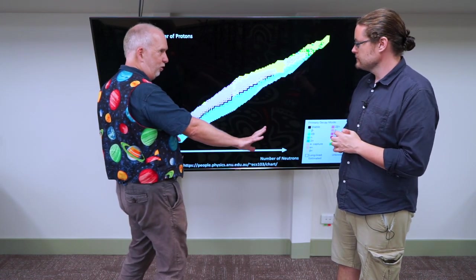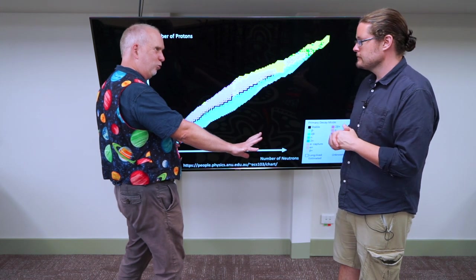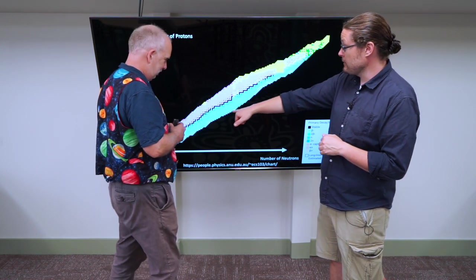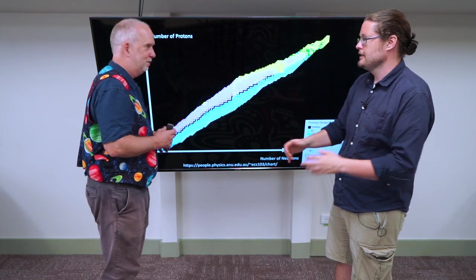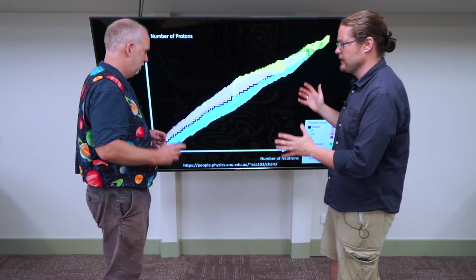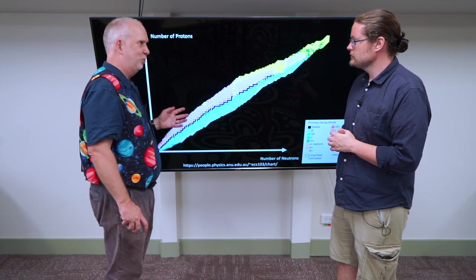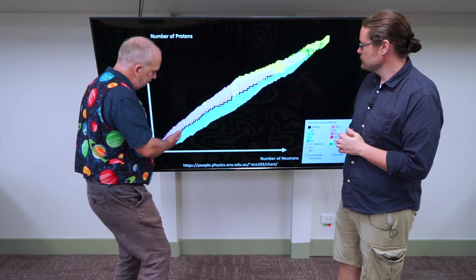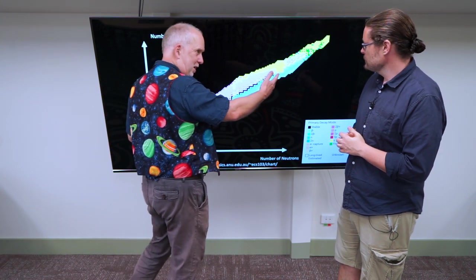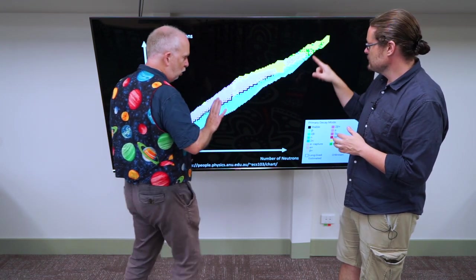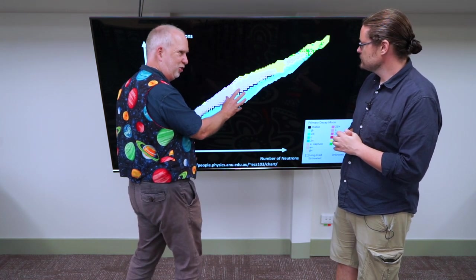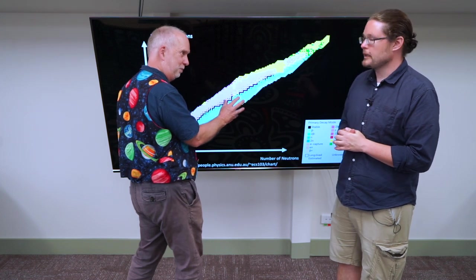If you have too many neutrons on one side, it's likely that the neutrons will decay producing a proton and an electron. And the further over you go, these get to fractions of a millisecond of them lasting. And the other way around, too many protons, the proton will tend to try and convert into a neutron somehow. So that's why most of the things lie near the diagonal line. But it changes up here. It's curving over a bit.